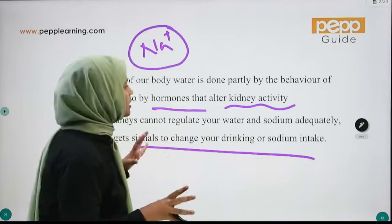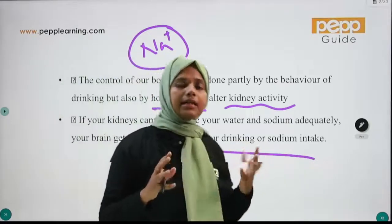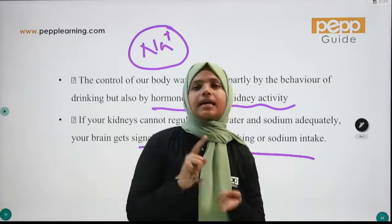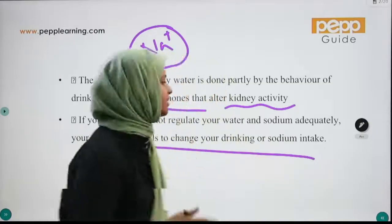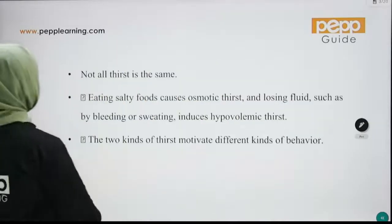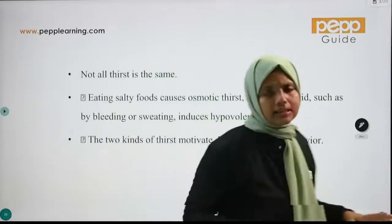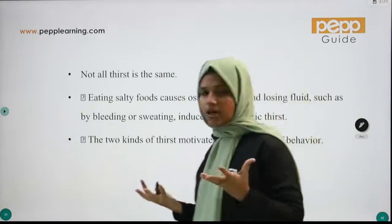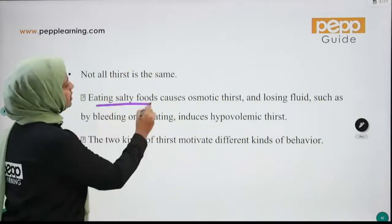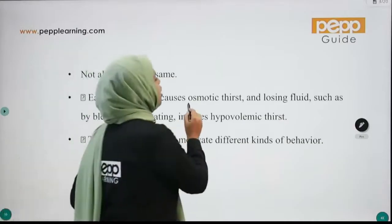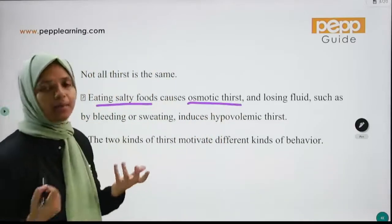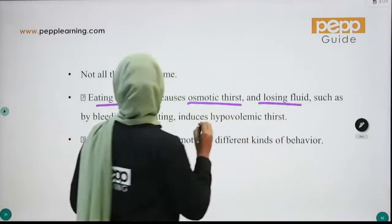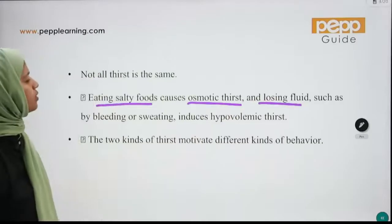There are two types of thirst. If you eat salty foods, that's why we need osmotic thirst — to maintain fluid content. Loss of fluid content such as by bleeding or sweating includes hypovolemic thirst.